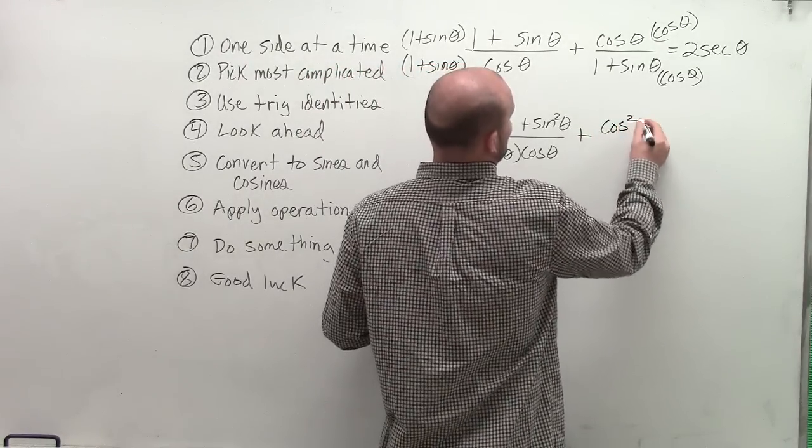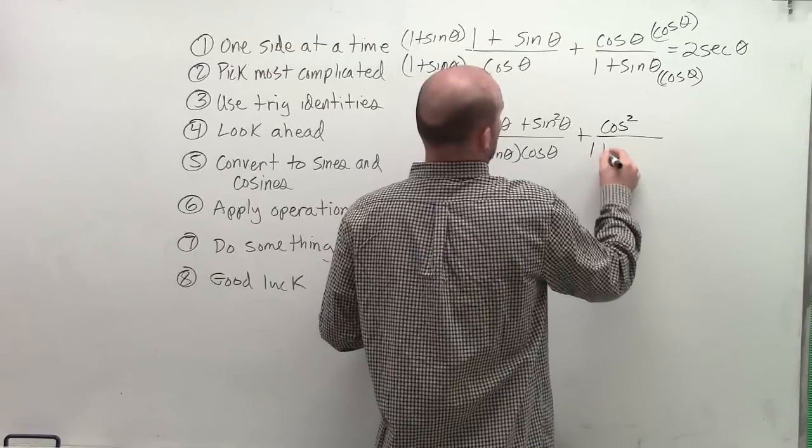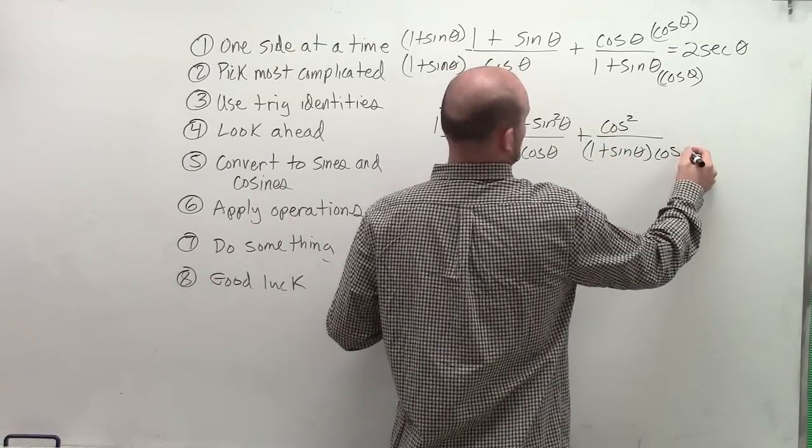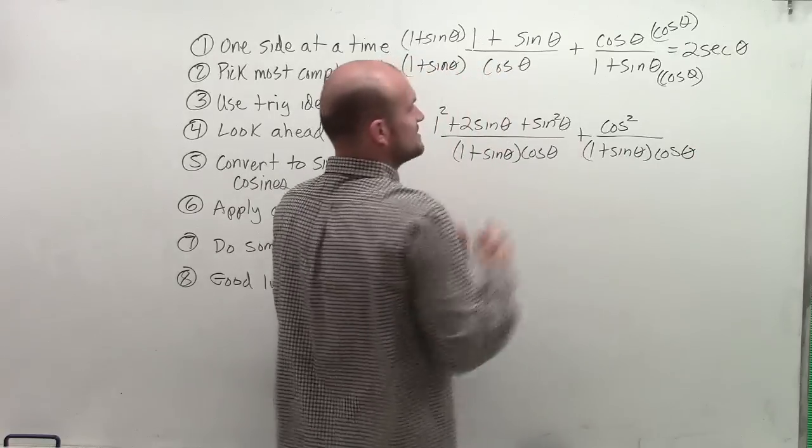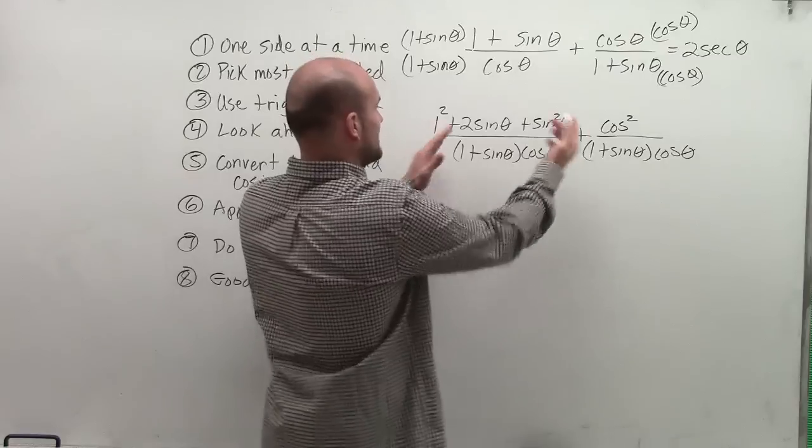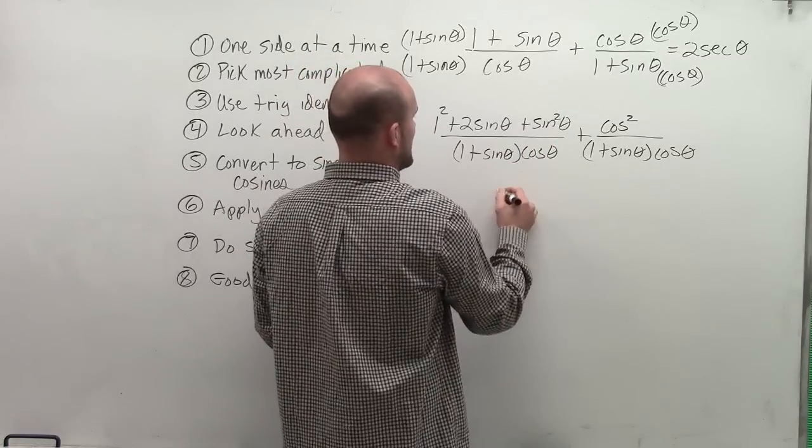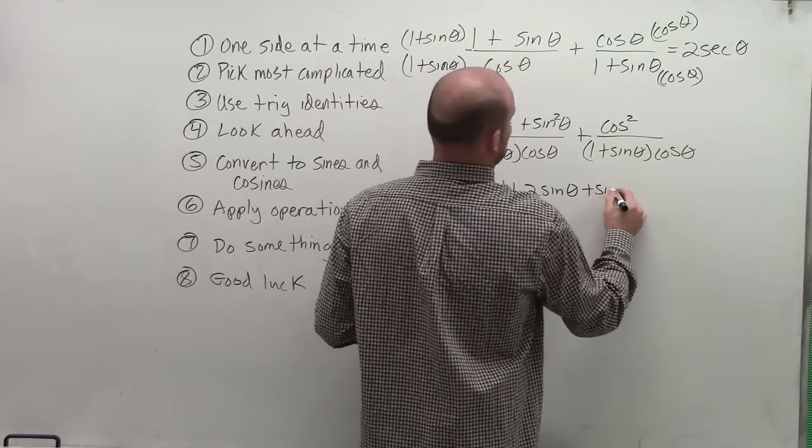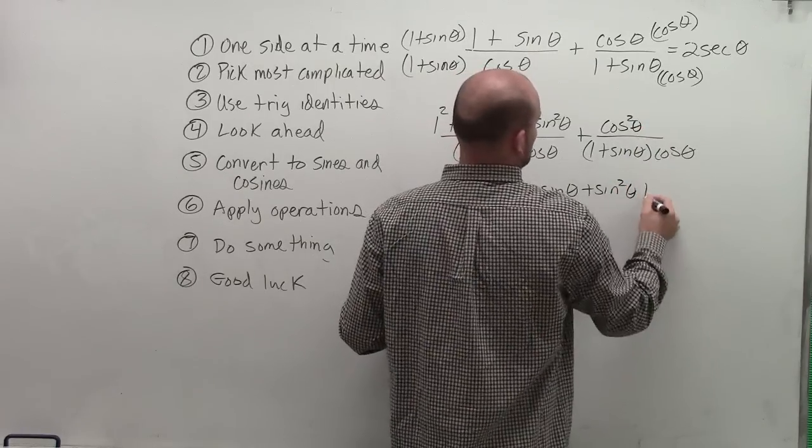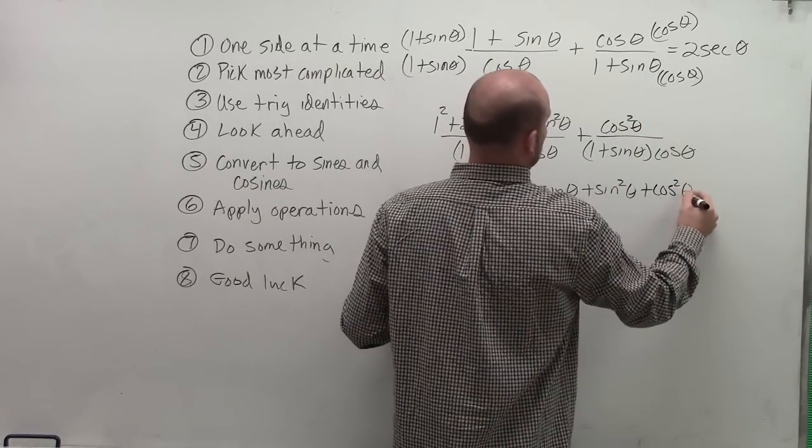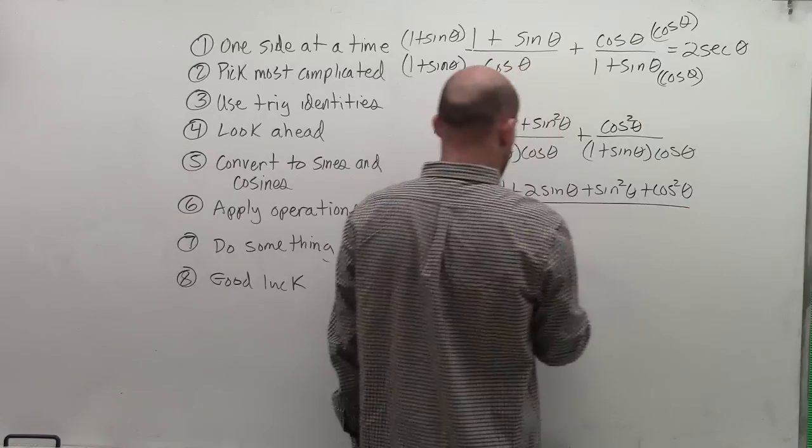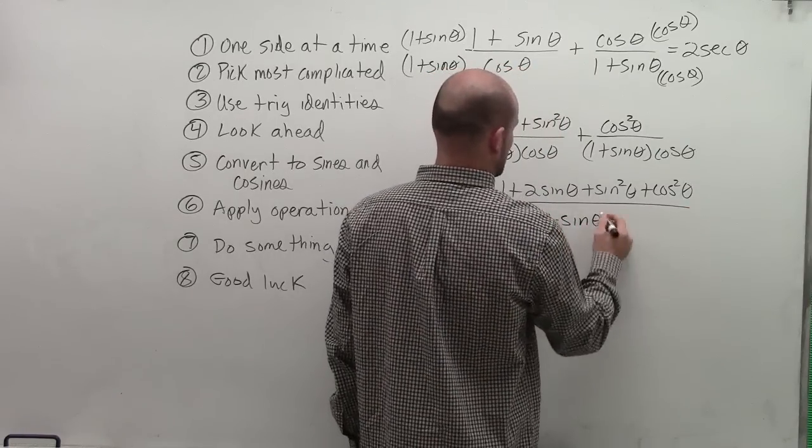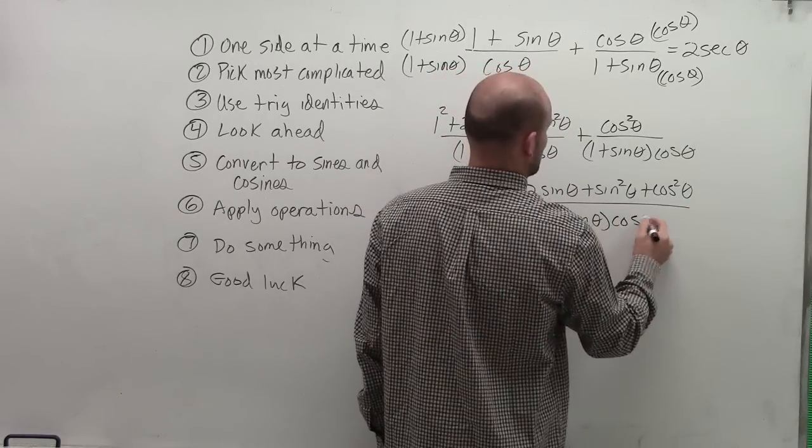Plus, I have cosine squared divided by 1 plus sine of theta times cosine of theta. All right? Well, now since I have them in the same denominator, I can combine my like terms here. So I'll have 1 plus 2 sine of theta plus sine squared of theta plus cosine squared of theta, all divided by 1 plus sine of theta times cosine of theta.